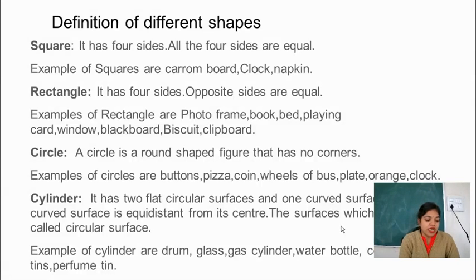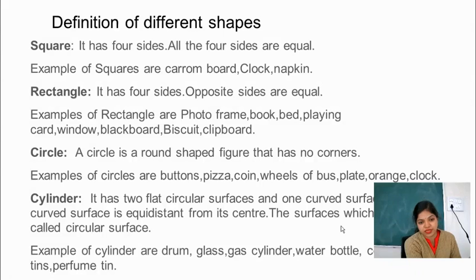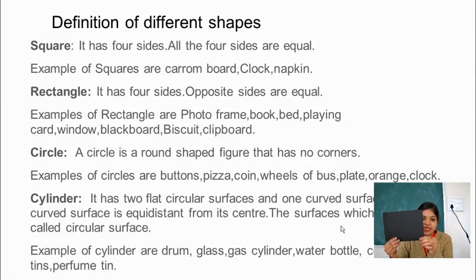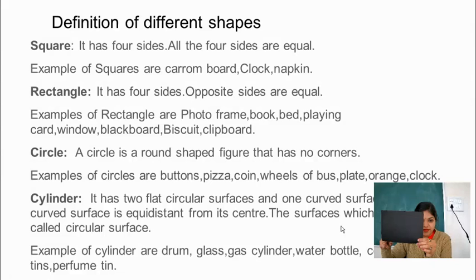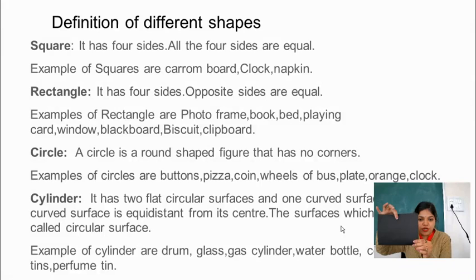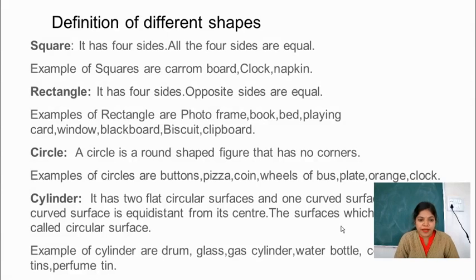So the next one we have is rectangle. Rectangle has also 4 sides. You can see it has 4 sides. Opposite sides are equal — this side is equal to this side, and this side is equal to this side. And there are so many examples of rectangle also.